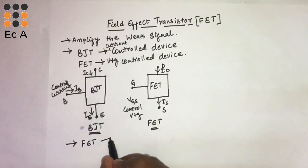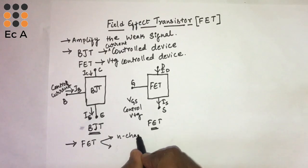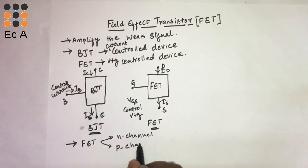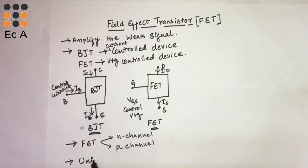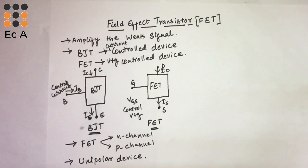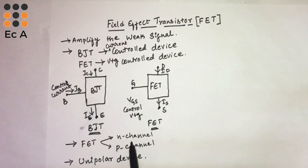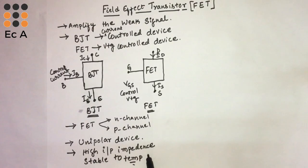BJT can be classified as NPN and PNP transistor, whereas FET can be classified as N-channel and P-channel transistors. BJT is a bipolar device — the conduction is a function of two charges: holes and electrons. But FET is a unipolar device because the conduction depends upon either electrons or holes. In N-channel FET the conduction depends only upon electrons, and in P-channel FET the conduction depends only upon holes.